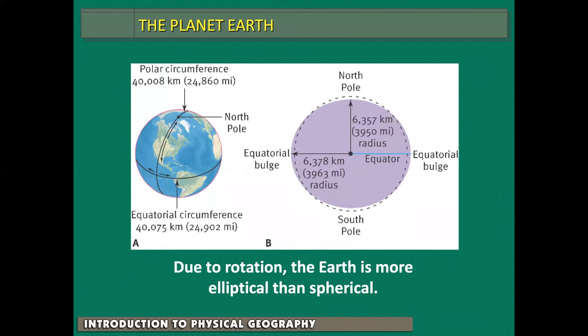The Earth is not a perfect sphere — it is sphere-like. It is fatter at the equator than at the poles. The Earth rotates on its axis, and that axis is pointed at a tilt. The Earth's orbit around the sun is more elliptical than circular. We'll get more into that coming up.